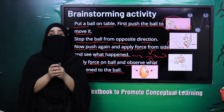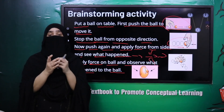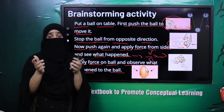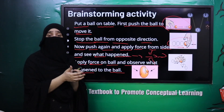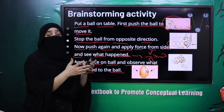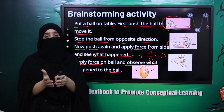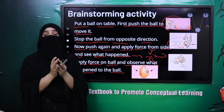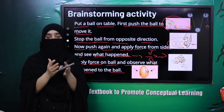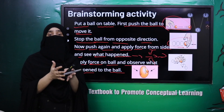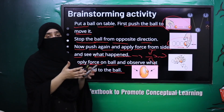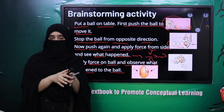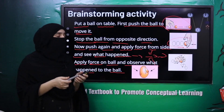So force jo hai wo is tarah se different effects daalti hai on the object: motion start karne mein help out karti hai, motion ko stop karti hai, jo object motion mein hota hai uski direction ko change karti hai, aur object ki shape ko change karti hai.